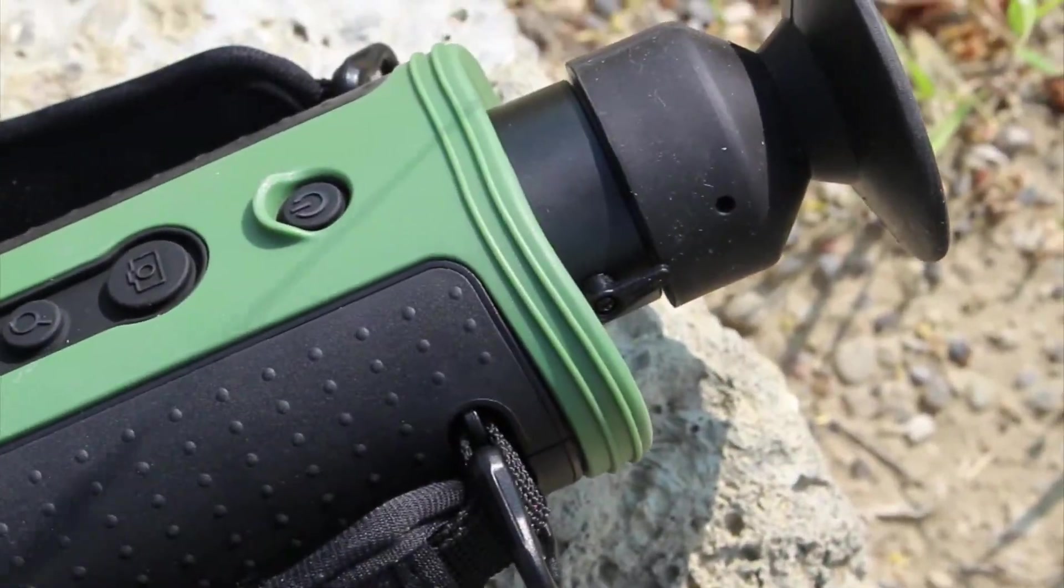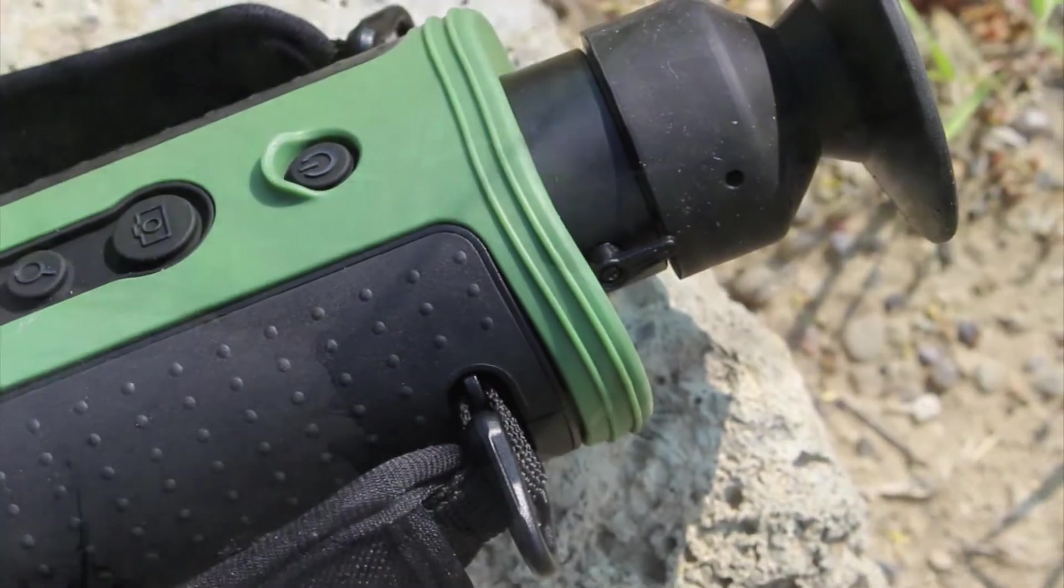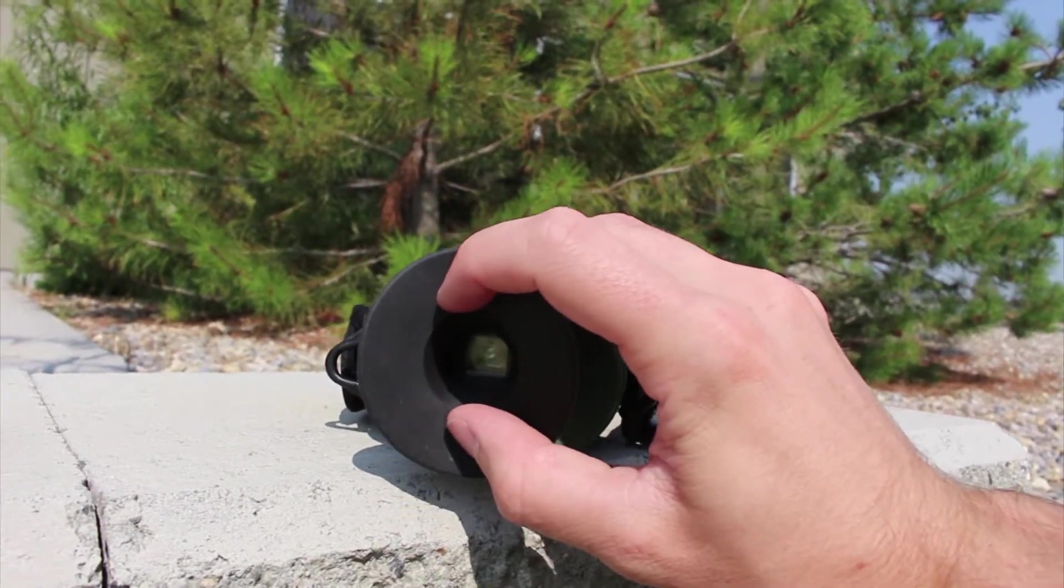You've also got a diopter adjustment on the side so you can focus the image for your eyes, and then on the rear you've got an iris-style eyepiece.